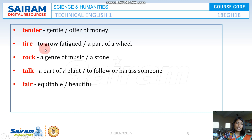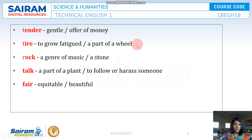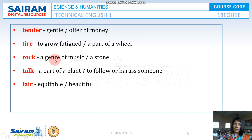TIRE can mean to grow fatigued, to grow tired, or it refers to the tire of a wheel — for example, 'the tire has punctured.' ROCK can mean the music genre or rocking — as in 'she is rocking,' meaning she is doing great.